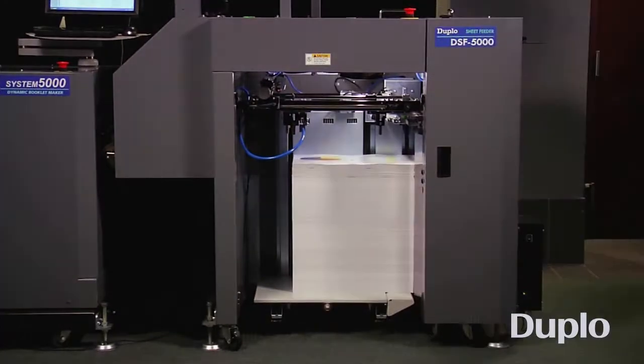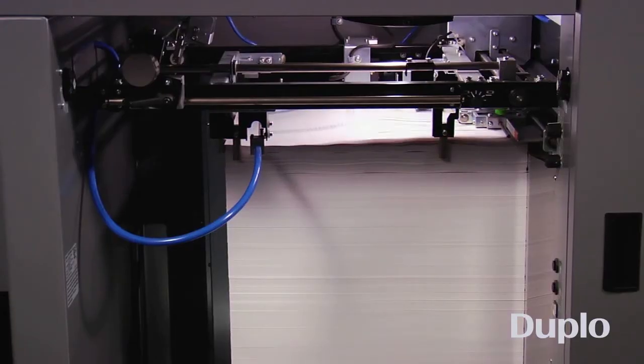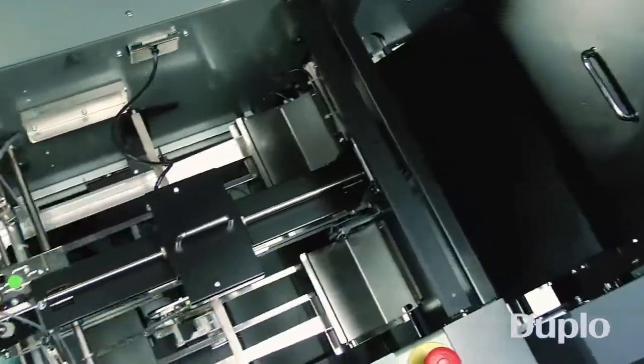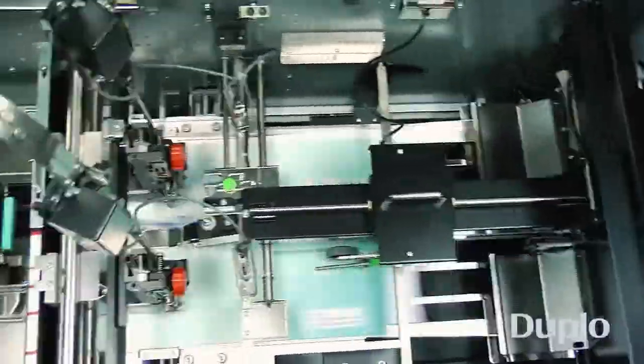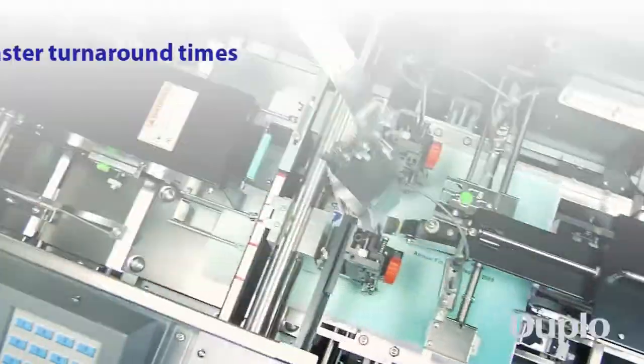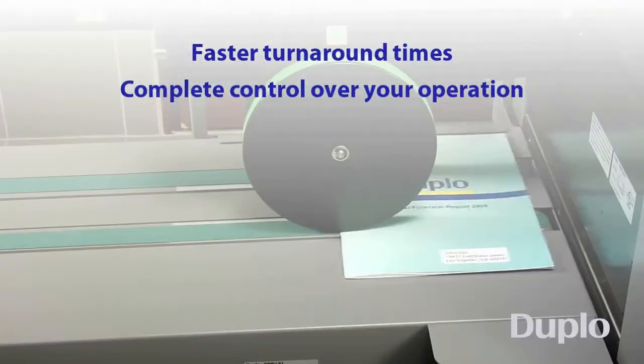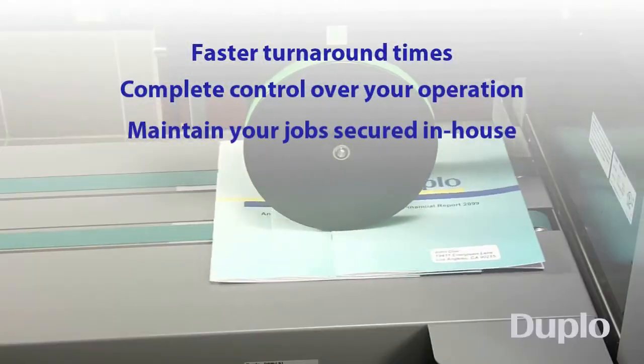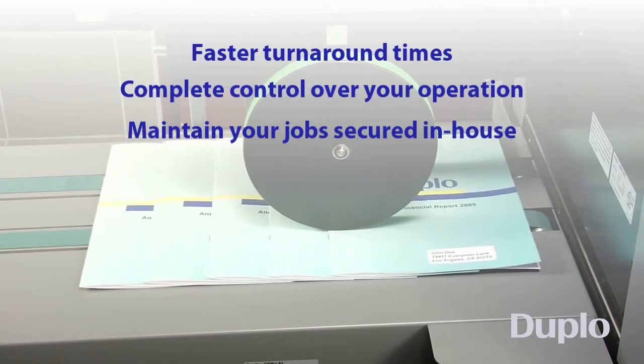Considering upgrading from a low-inch system or bringing your finishing in-house, the DSF 5000 inline with a Duplo booklet maker will bring you faster turnaround times, complete control over your operation, and the ability to maintain your jobs secured in-house.